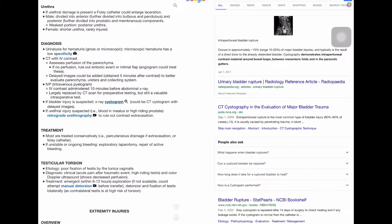For treatment, most are treated conservatively with percutaneous drainage or a Foley catheter. However, if the patient remains unstable or has ongoing bleeding, an exploratory laparotomy and repair of active bleeding is performed. Lastly, we have testicular torsion which can be caused by a poor fixation of the testes by the tunica vaginalis. This is diagnosed with a color Doppler ultrasound. And to treat, emergent exploration is followed by detorsion and fixation of the testes bilaterally since the contralateral testes is left at a higher risk of torsion.